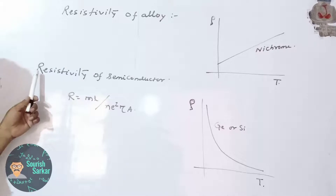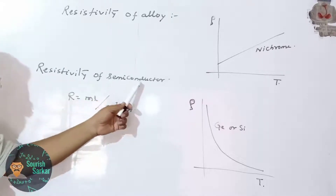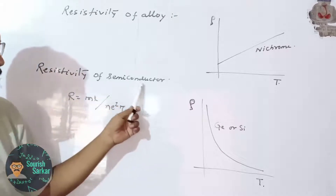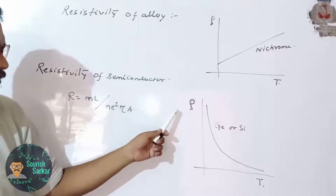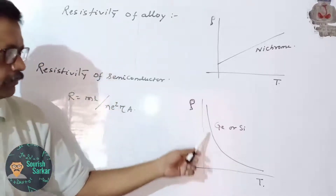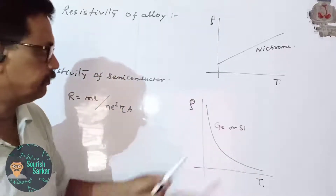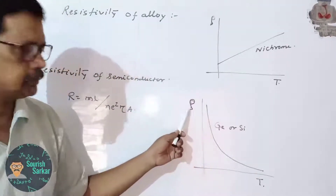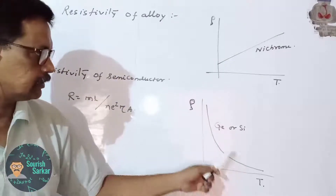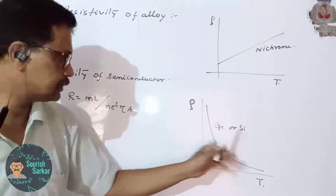Next we are going to discuss resistivity of semiconductors — how the resistivity of a semiconductor varies with temperature. This is the graphical representation showing the variation of resistivity with temperature for semiconductor germanium or silicon.